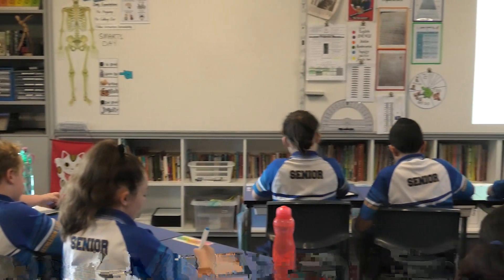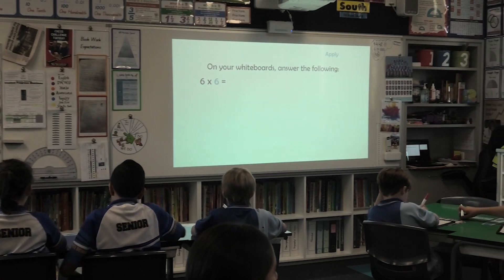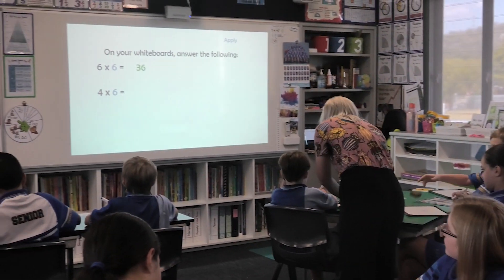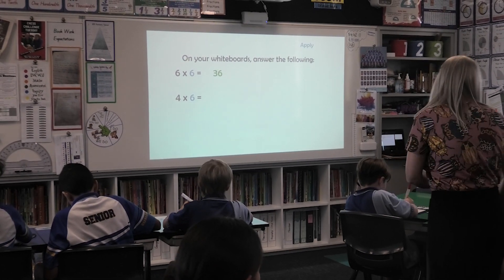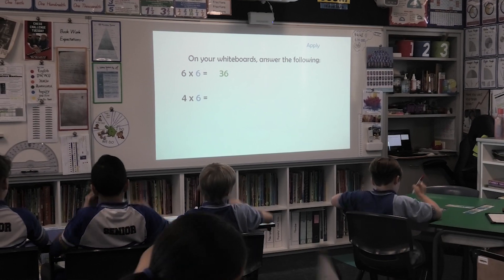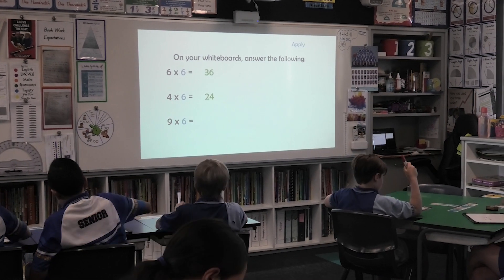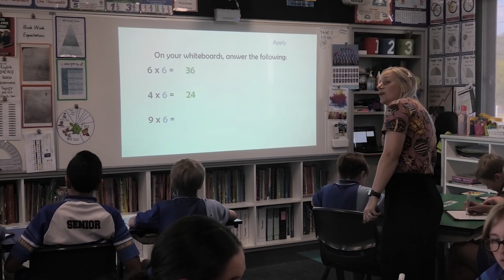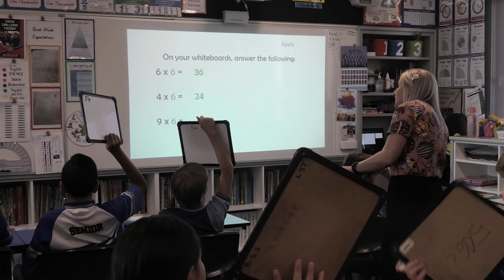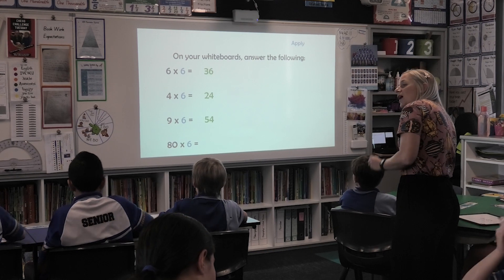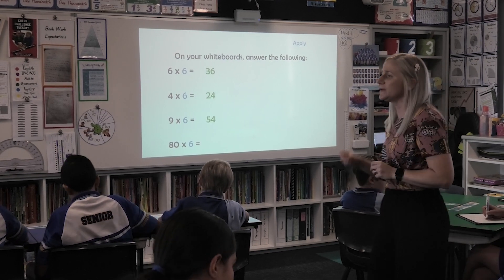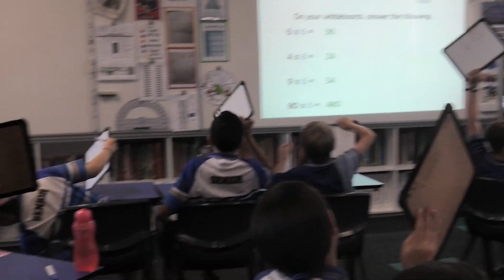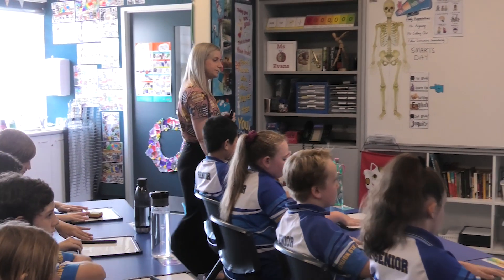On your whiteboards, what is 6 times 6? 5, 4, 3, 2, 1. Boards up. Short, sharp, bossy, go. 36. Excellent. Next one. 4 times 6. 5, 4, 3, 2, 1. Boards up. Short, sharp, bossy, go. 54. Excellent. Last one. 80 times 6. If you know 8 times 6, you know 80 times 6. Don't be rude. Add a zero. 5, 4, 3, 2, 1. Boards up. Short, sharp, bossy, go. 480. Excellent. Boards to the front of your desk.